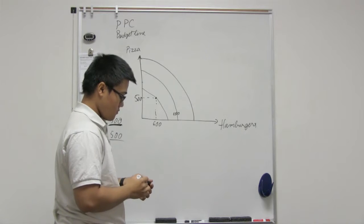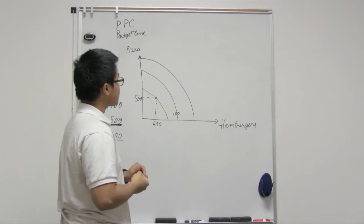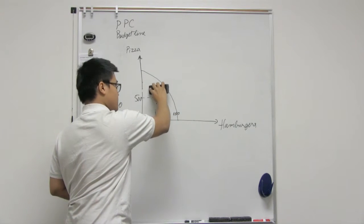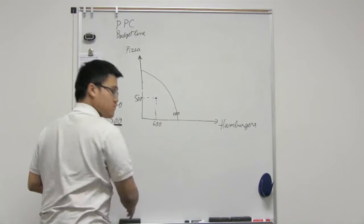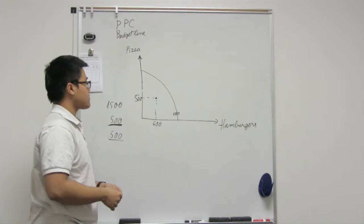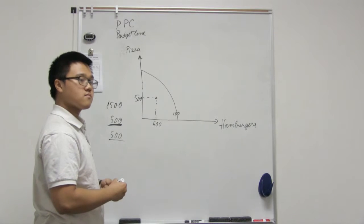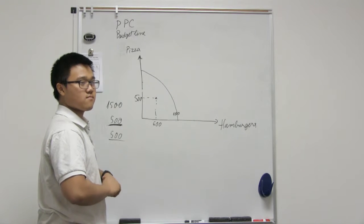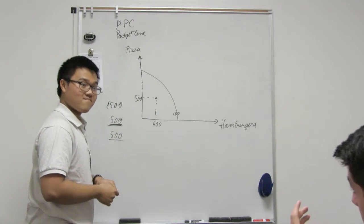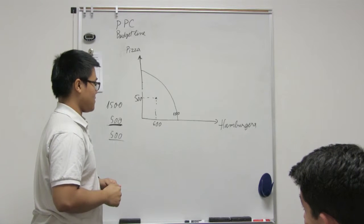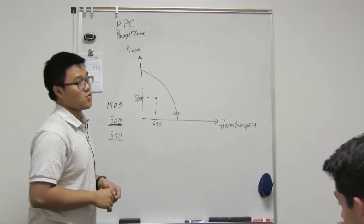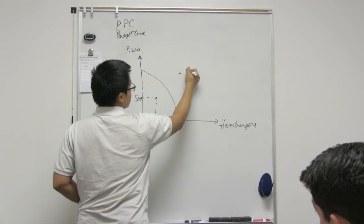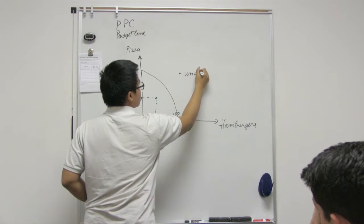Now with unattainable resources, or unattainable things, you're on the outside of the PPC. Now what does that mean? With being unattainable, that means your resources are unattainable, you don't have enough employees. It just means everything is unattainable. So unattainable means that you can't produce that much because you don't have resources. So any point outside of that curve will be unattainable.